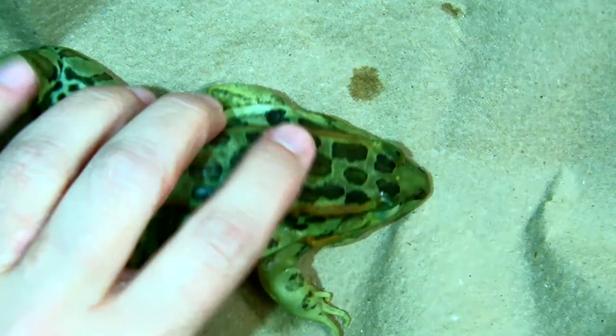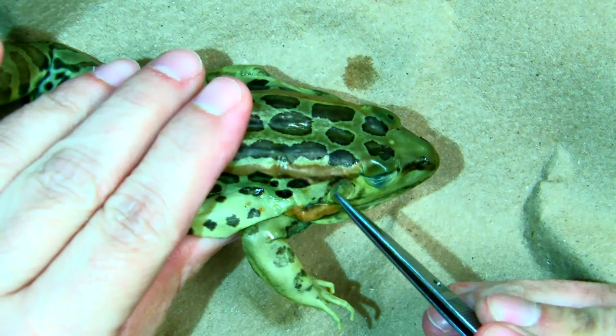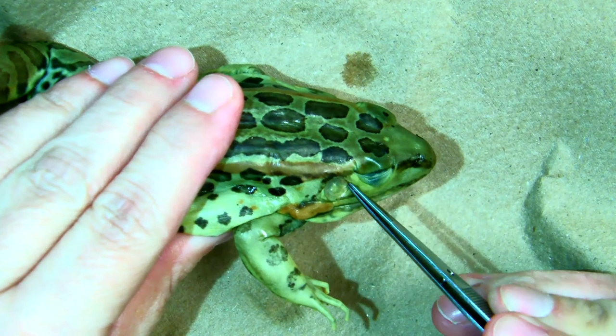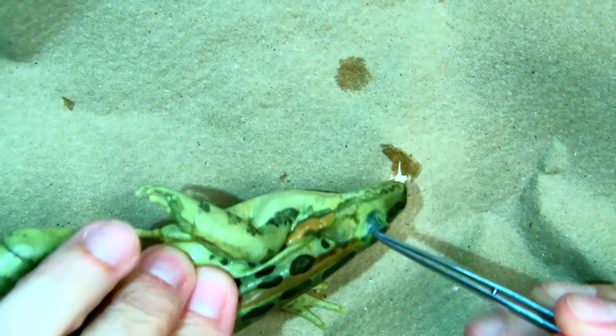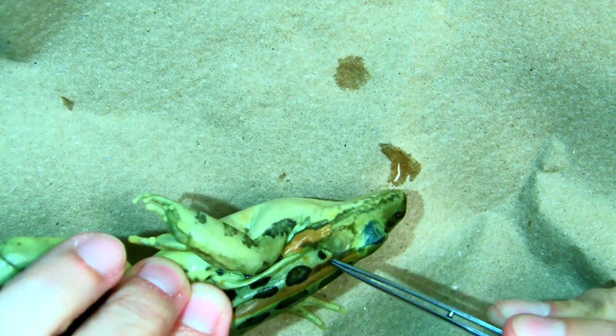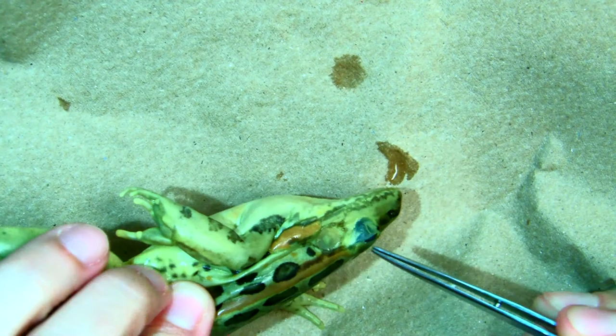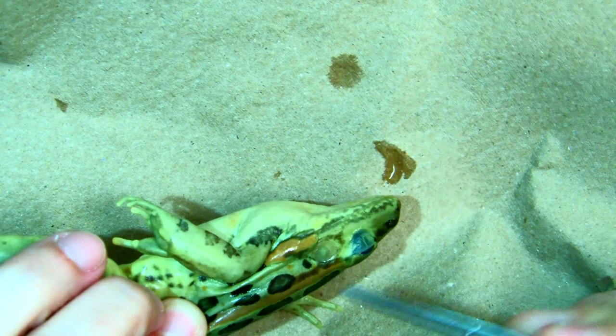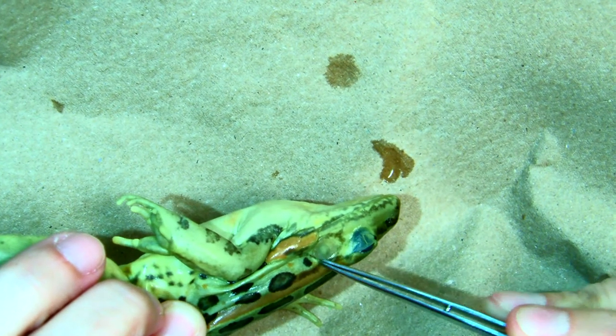We have what's called a tympanic membrane here on both sides. This is their eardrum. We have an eardrum, but it's inside our ear canal. Their eardrum is on the outside.